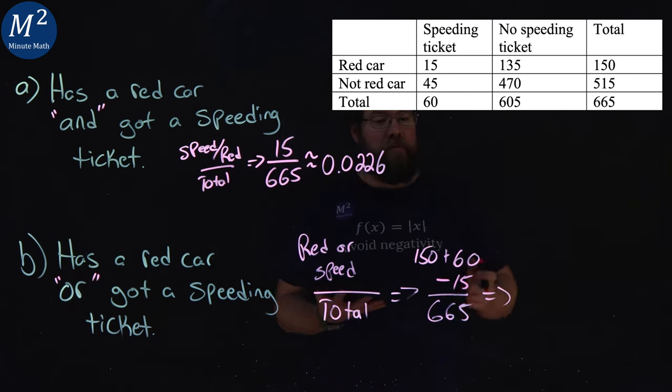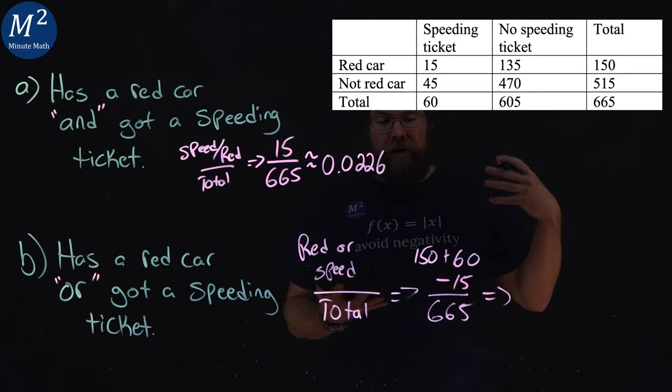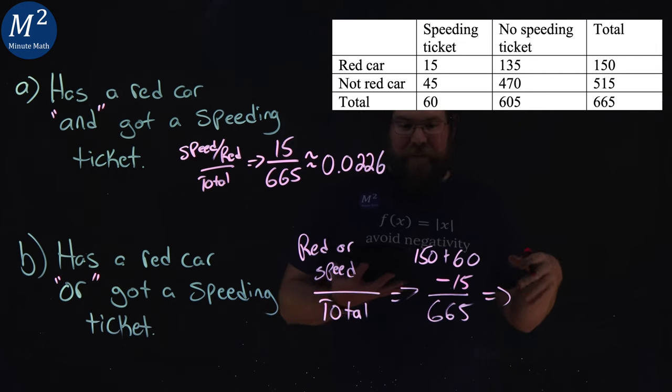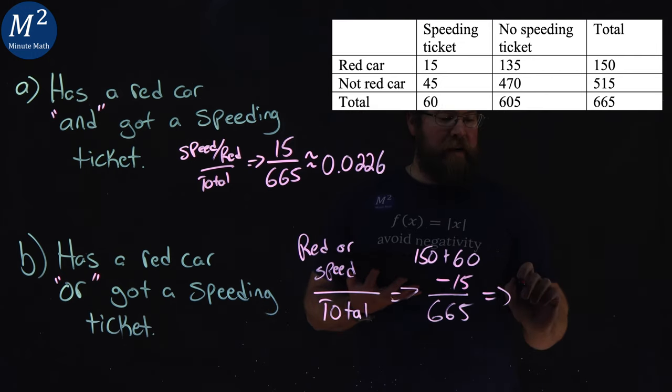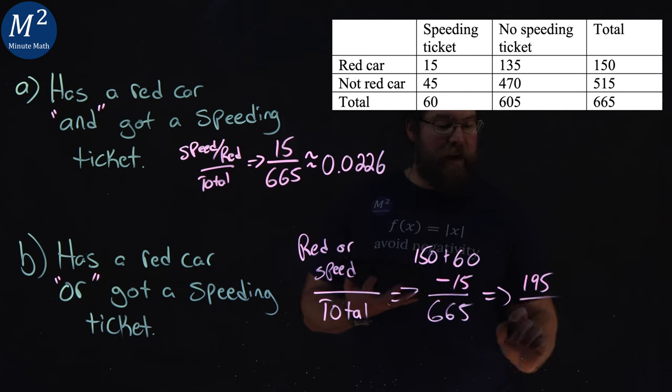So if we simplify that, 150 plus 60 is 210, minus 15 is 195. So 195 out of 665 here.